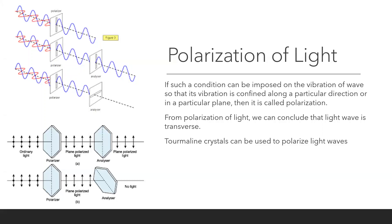To visualize this another way, consider a string. If you vibrate the string up and down, the wave goes up and down. At the same time, if you vibrate it in the horizontal direction, you get waves going both up-and-down and horizontally. Now, if you keep a narrow vertical slit in its path, the wave that comes out will be vibrating only in one direction — the horizontal vibrations cannot pass through the vertical slit, so the outgoing wave has vibrations only in that one direction.